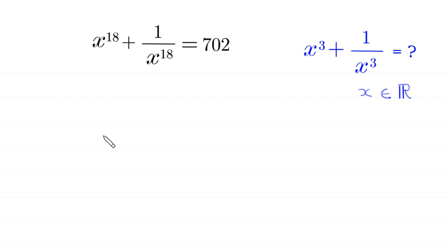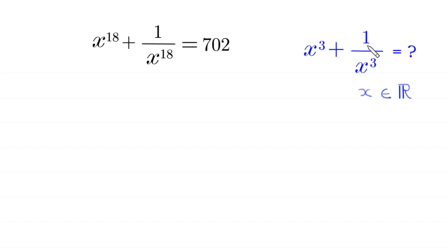Hello everyone, you are welcome to how to solve this very nice algebra equation. x to the power 18 plus 1 over x to the power 18 is equal to 702. Our job is to find all possible values of x cubed plus 1 over x cubed, such that x is a real number.